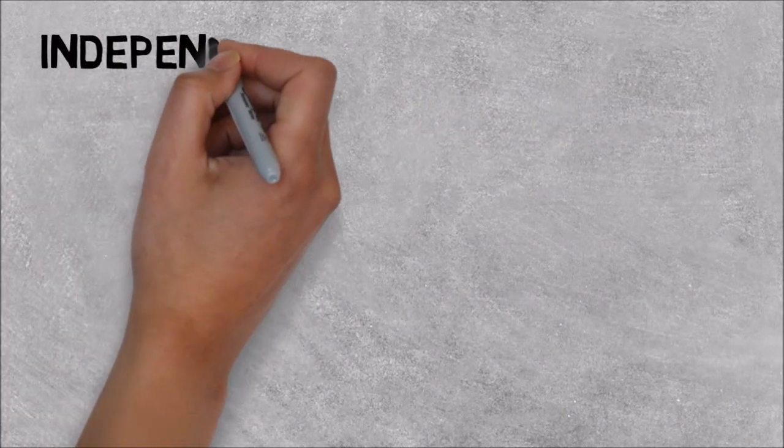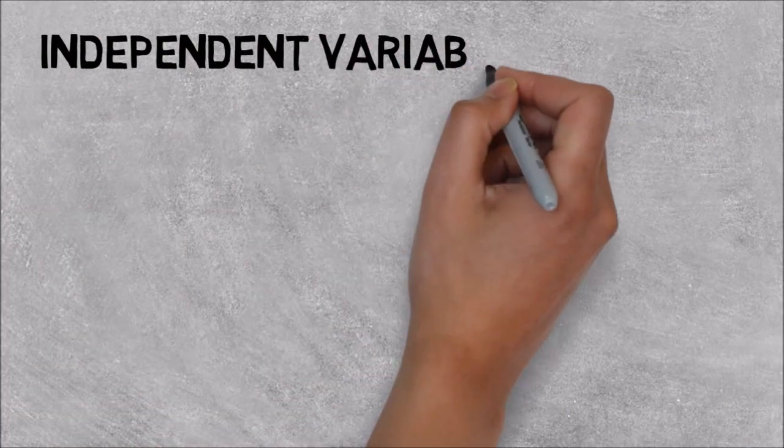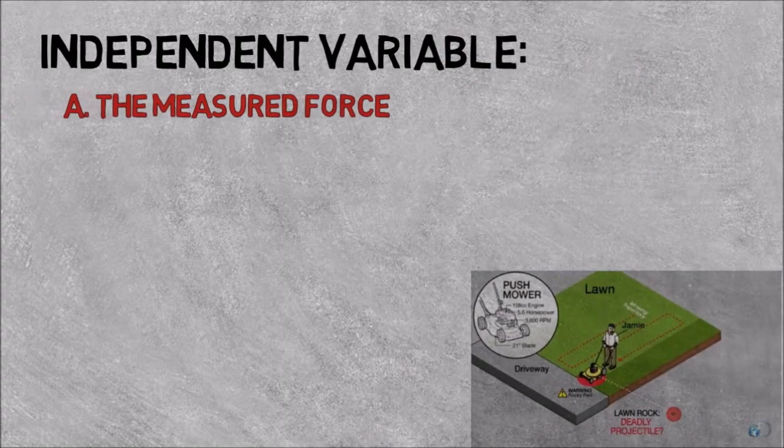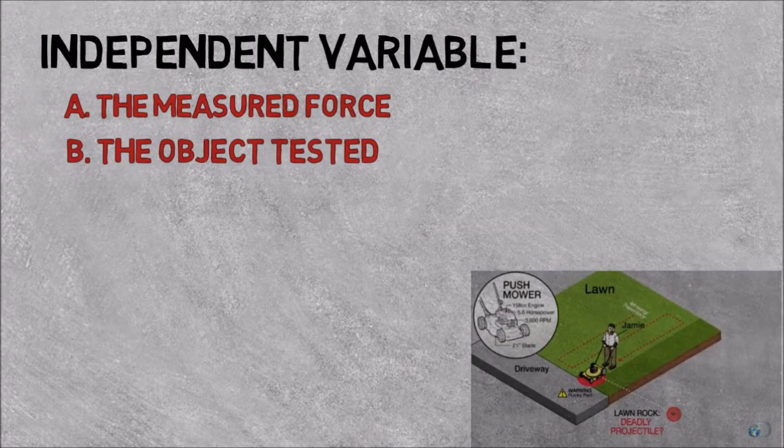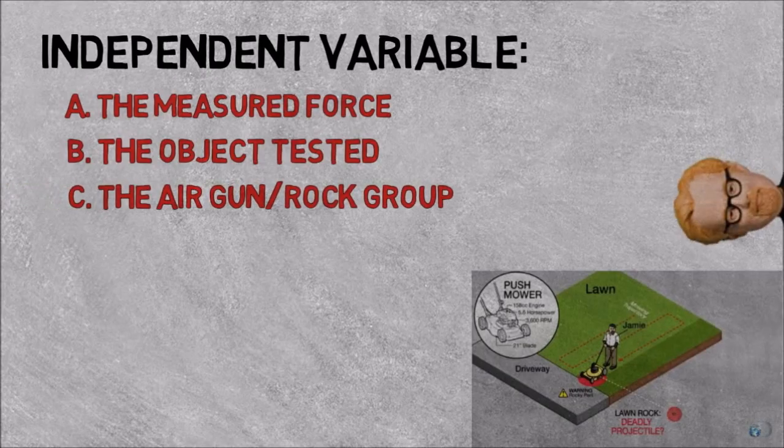Now which of the following is the independent variable of this experiment? The measured force of the bullet and the rock, the object being tested, or the airgun rock group?